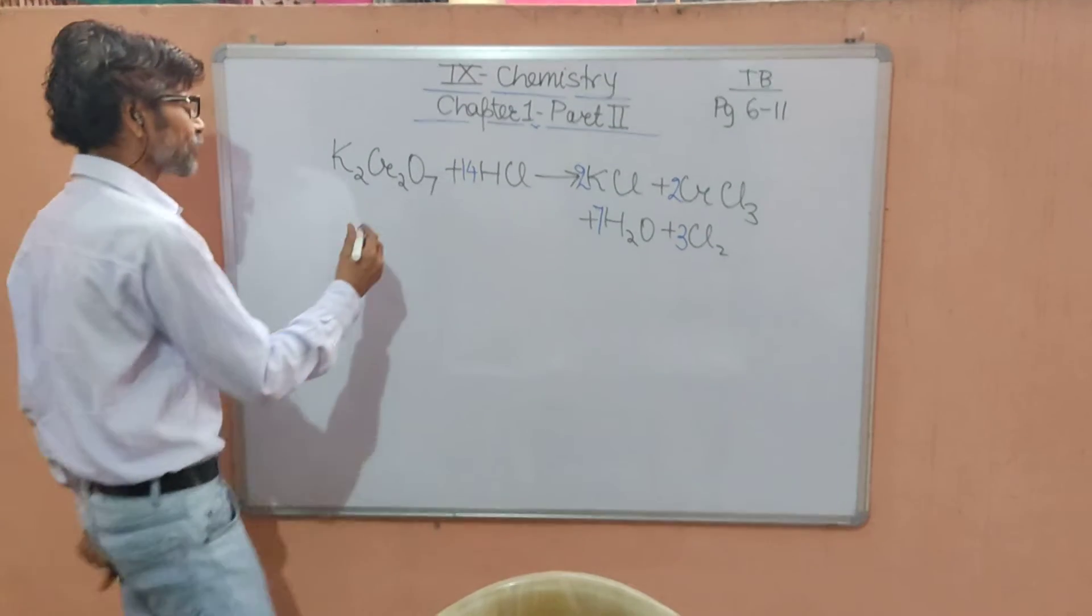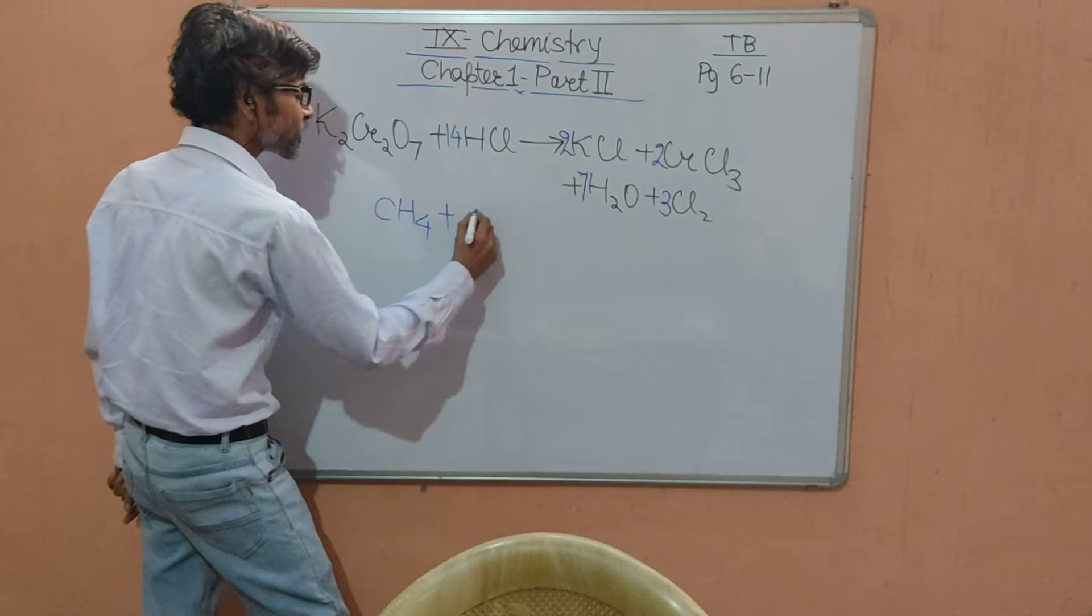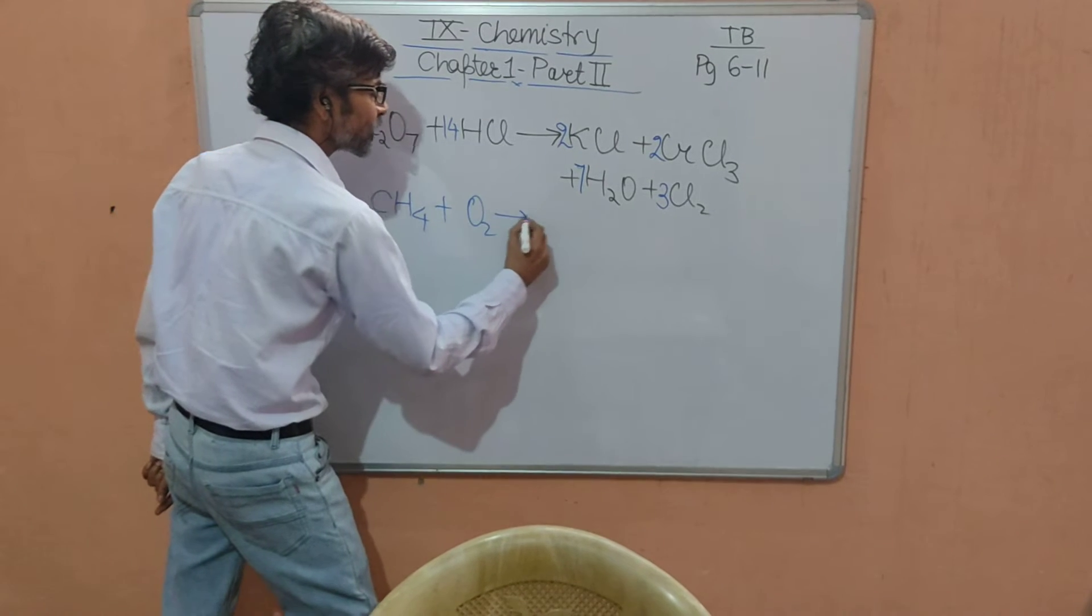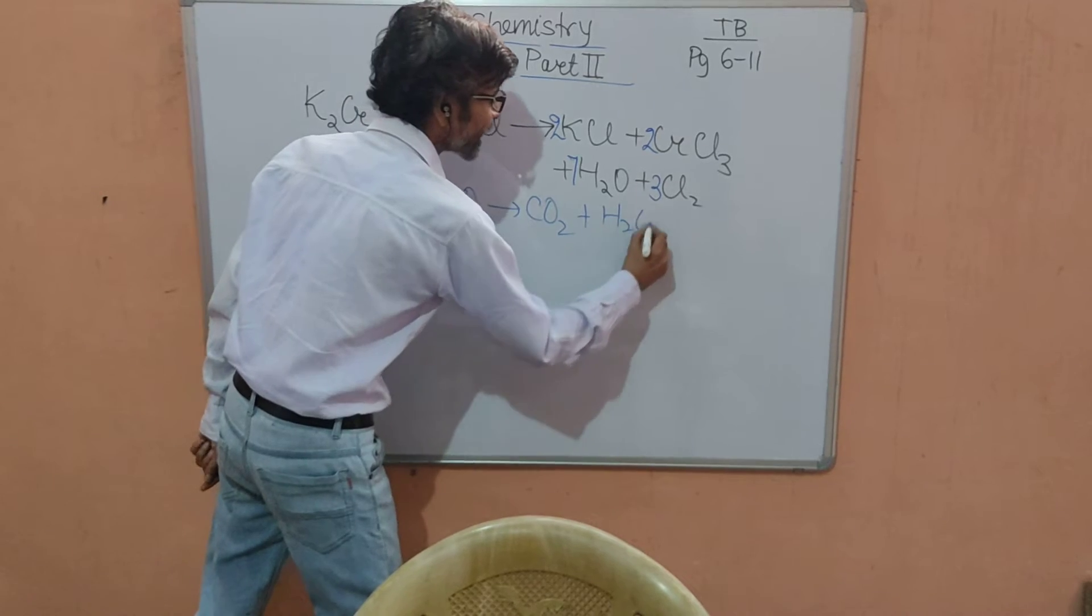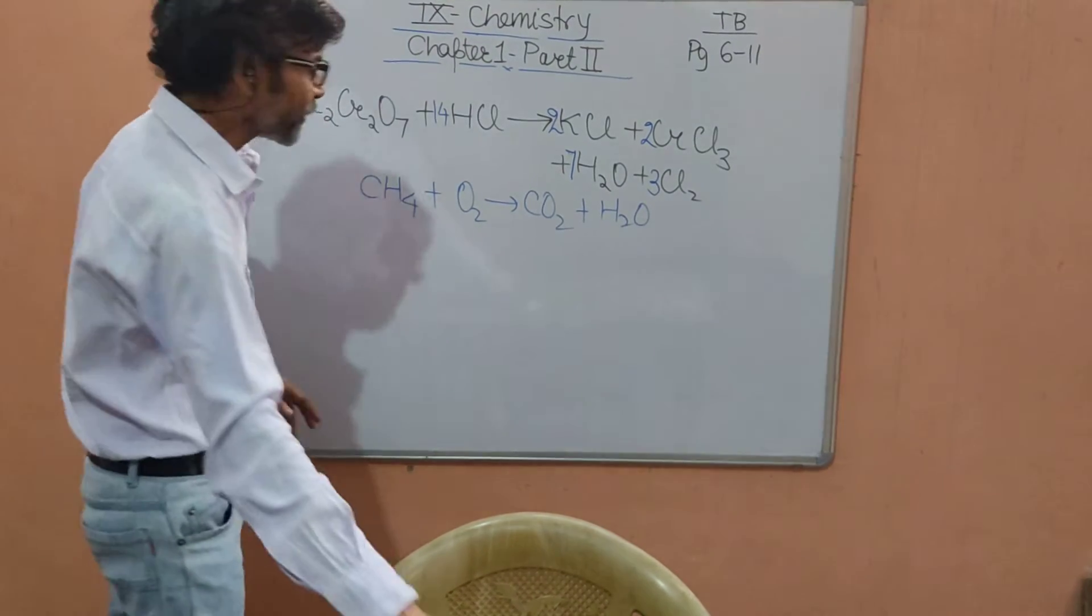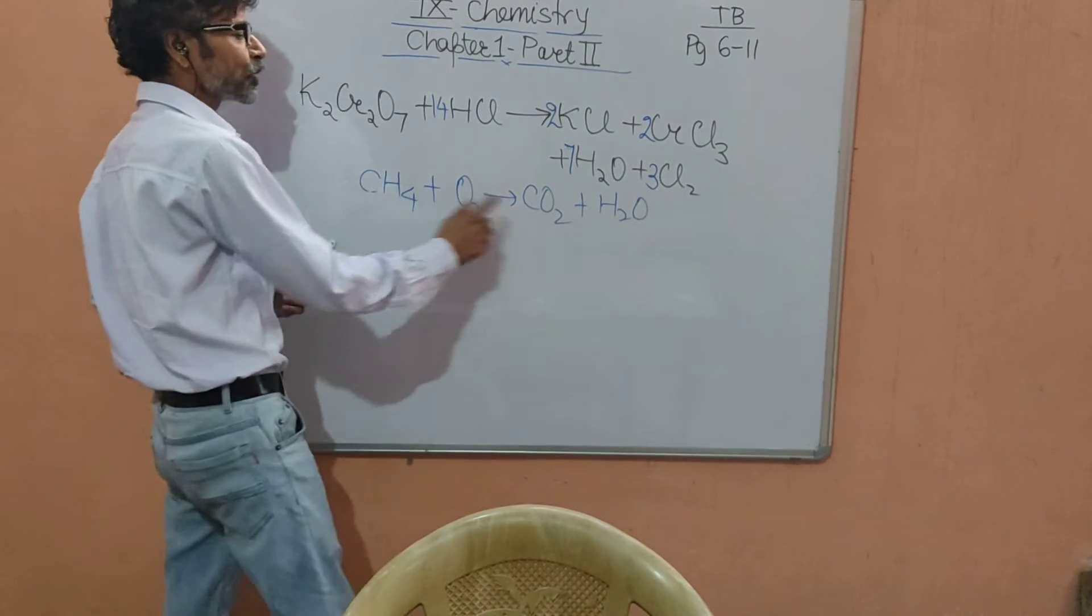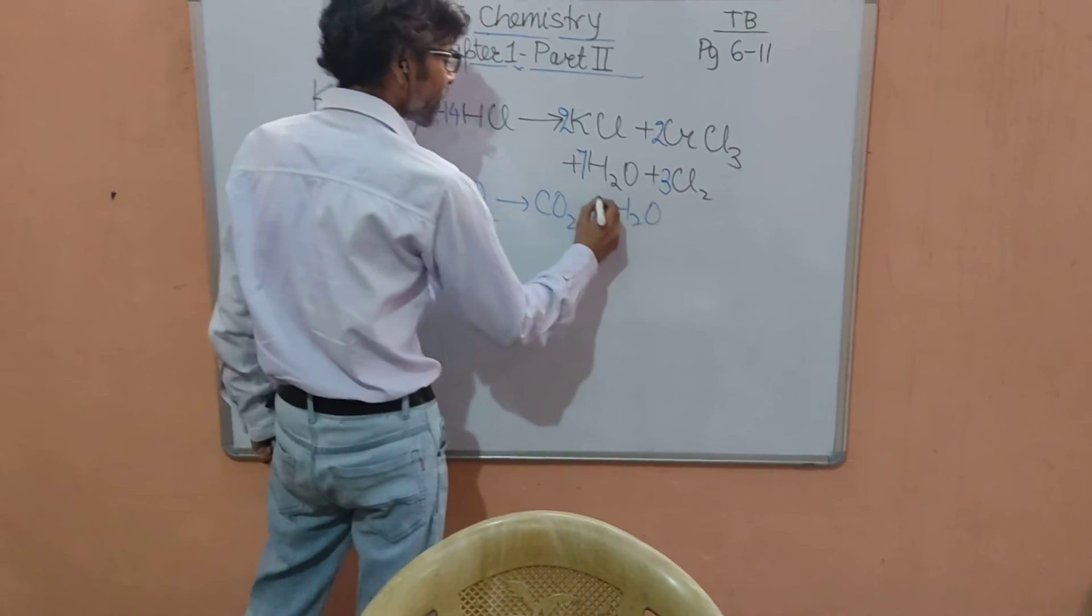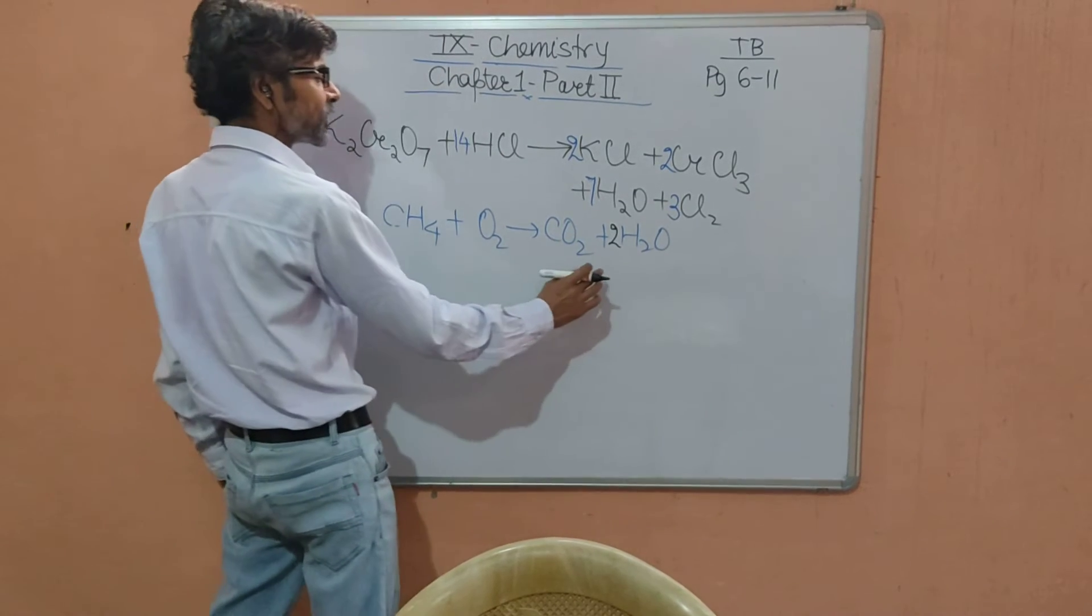For the smaller equation work is even simpler. Like here, CH4 plus O2 giving you CO2 plus H2O. Now to balance, when we start we find carbon is already balanced. But the hydrogen, here four hydrogen, here only two hydrogen, that's why multiplying this by two we make it four. Now the hydrogen is balanced.